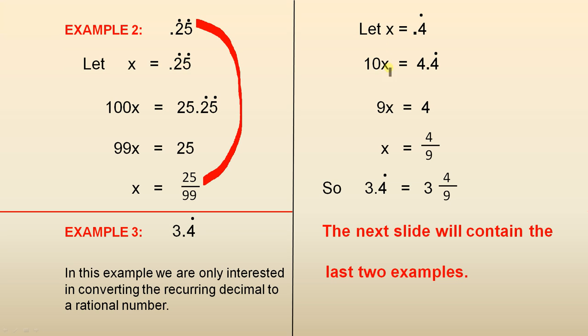So let x equals 0.4 recurring. So 10x equals 4.4 recurring. 10x minus x is 9x. 4.4 recurring take away 0.4 recurring is 4. So 9x equals 4. So x equals 4 over 9. Therefore 3.4 recurring is 3 and 4 ninths. So that is equal to that.